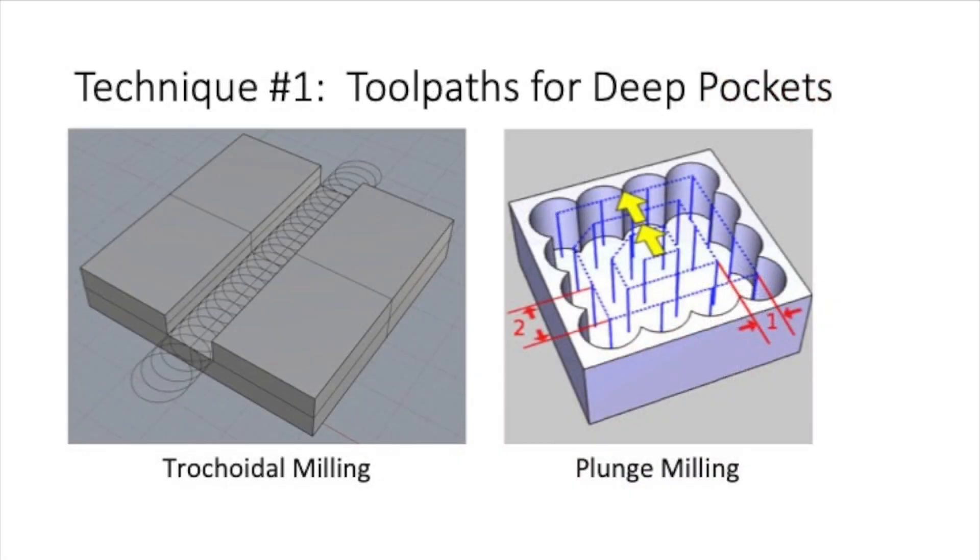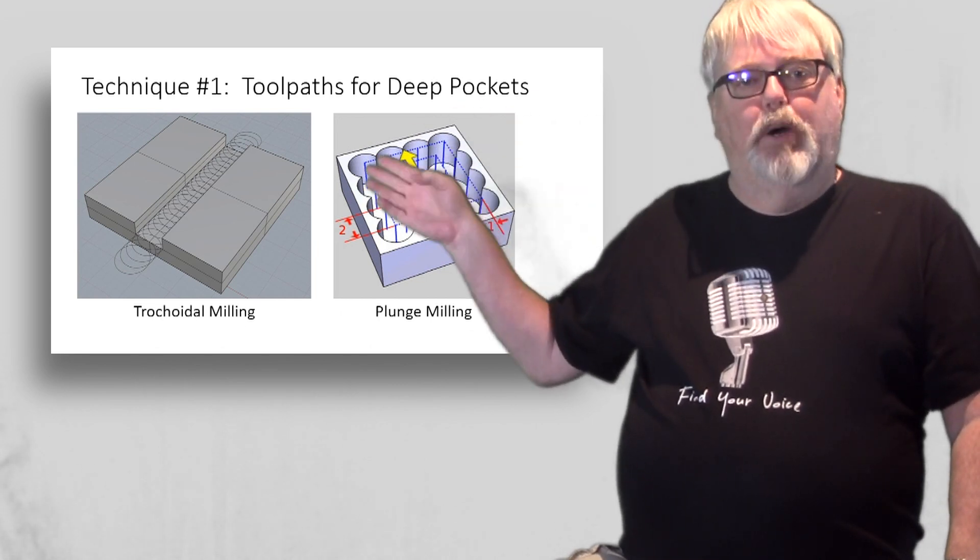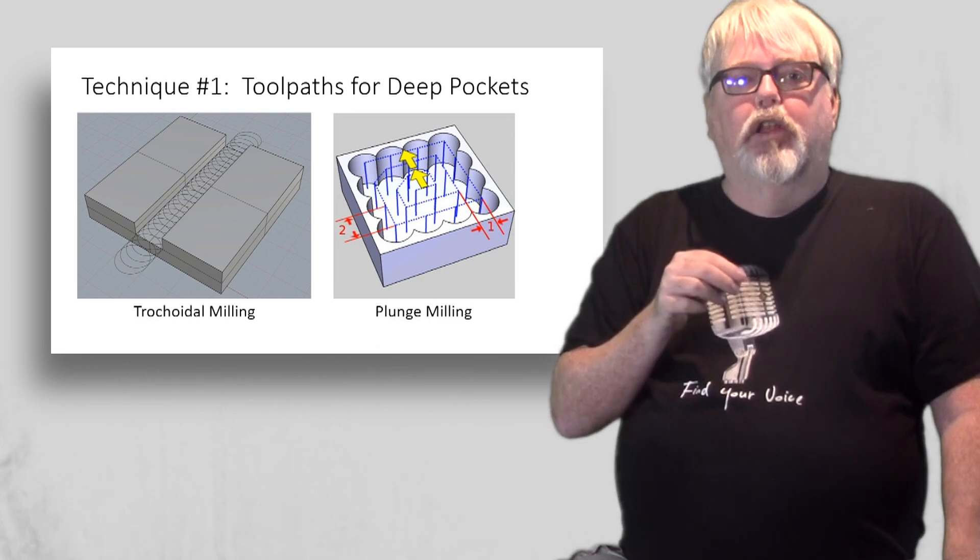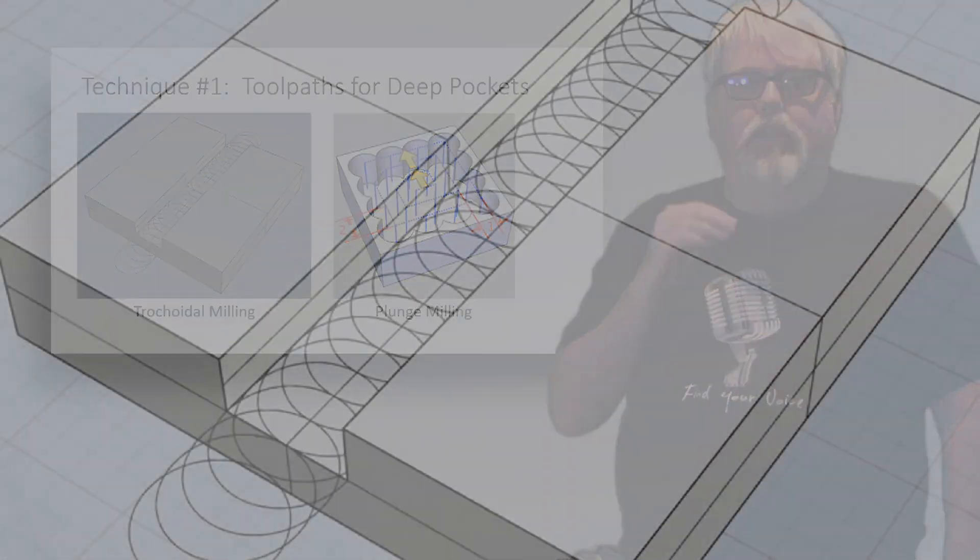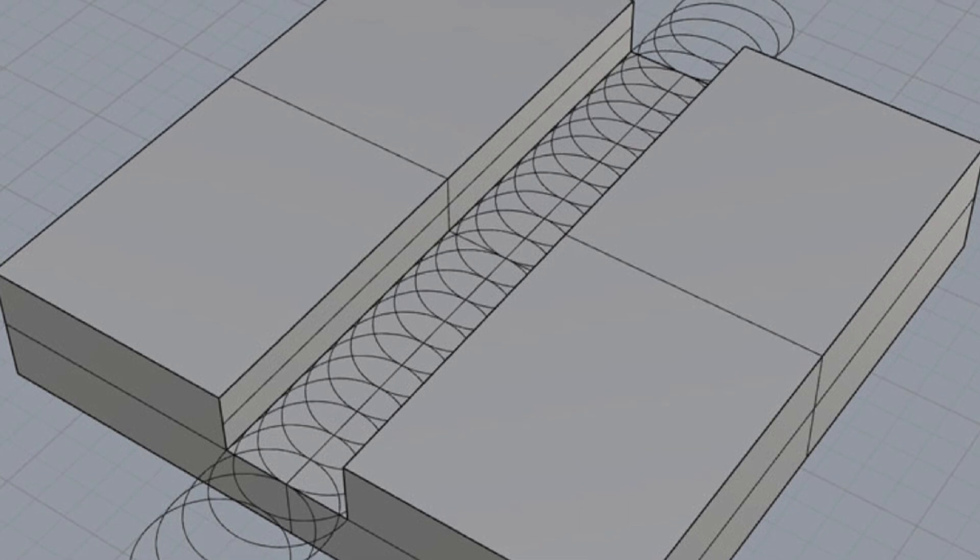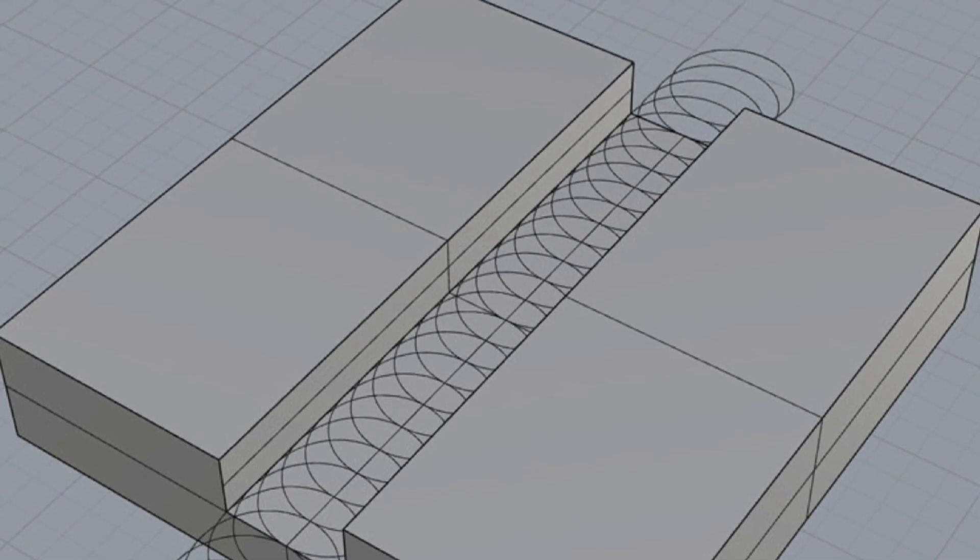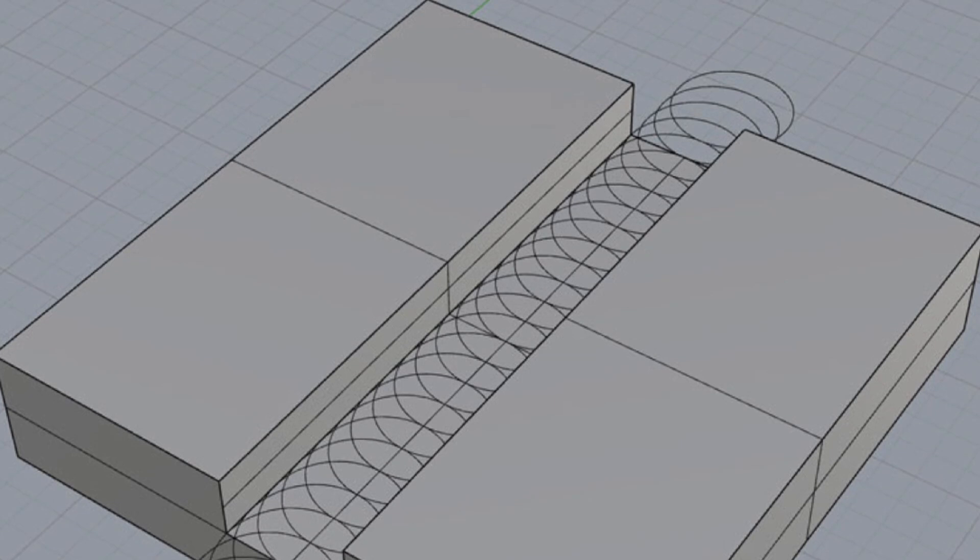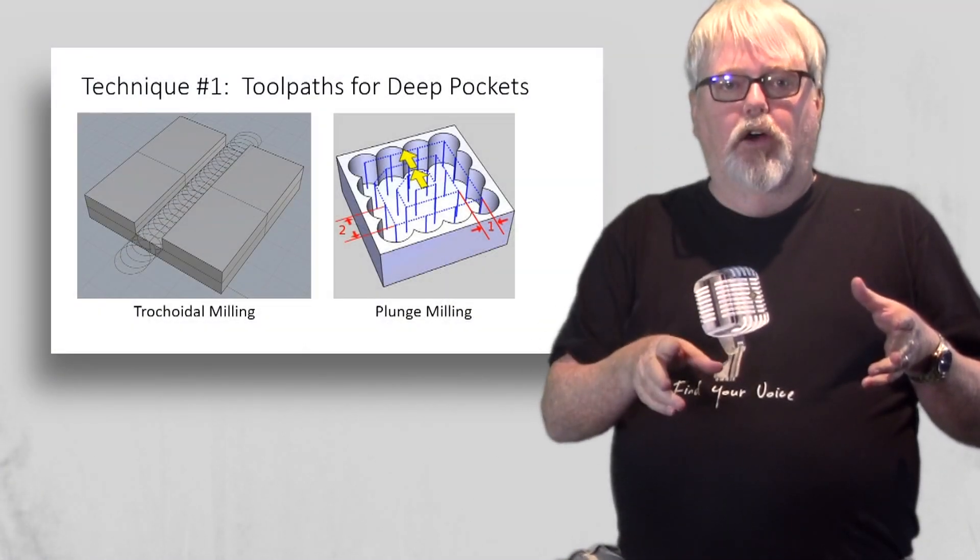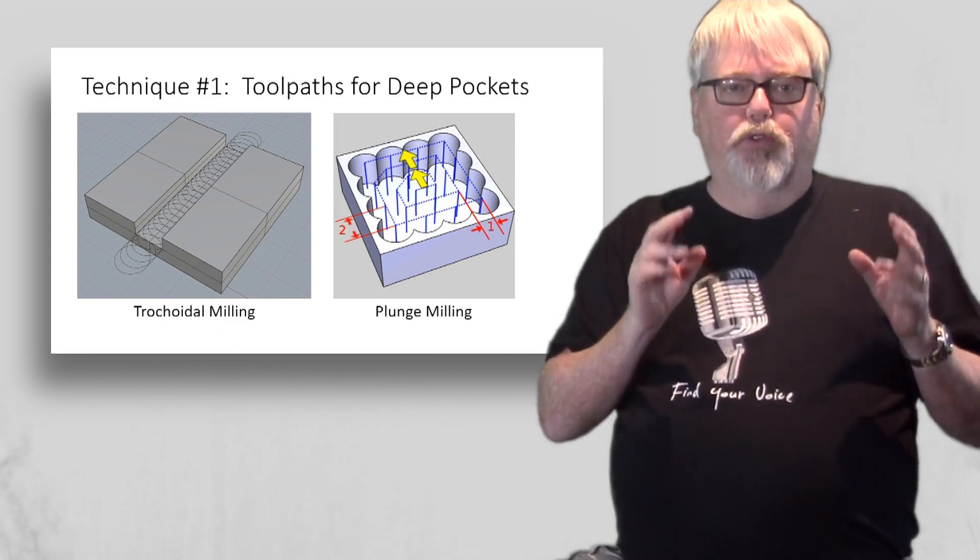Technique number one. First up are tool paths that are particularly helpful for deep pockets and slots. Trochoidal milling is all about arcing into the cut rather than just slamming the cutter straight in full width. If your CAM has virtually any high speed machining tool paths, you may benefit from them when doing deep pockets. If nothing else, they generate lower and more consistent cutting forces which helps with tool deflection.